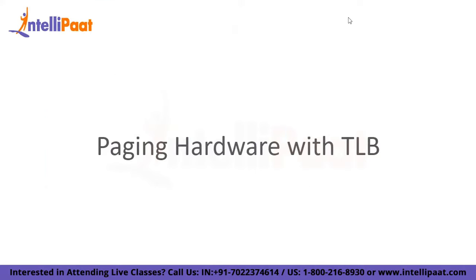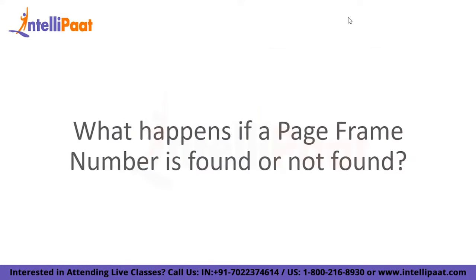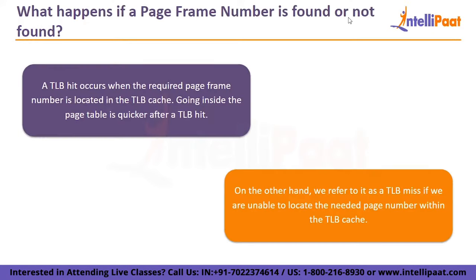In paging hardware with TLB, instead of going directly to the page table for a specific page, we first check the TLB. We obtain the TLB index and matching frame number using the page number, then generate the physical address using the frame number and page offset, saving significant time by bypassing the page table. A TLB hit occurs when the required page frame number is found in the TLB cache — this is quicker than consulting the page table. A TLB miss occurs when the needed page number cannot be located in the TLB cache, requiring the page table to be consulted to create the appropriate physical address.